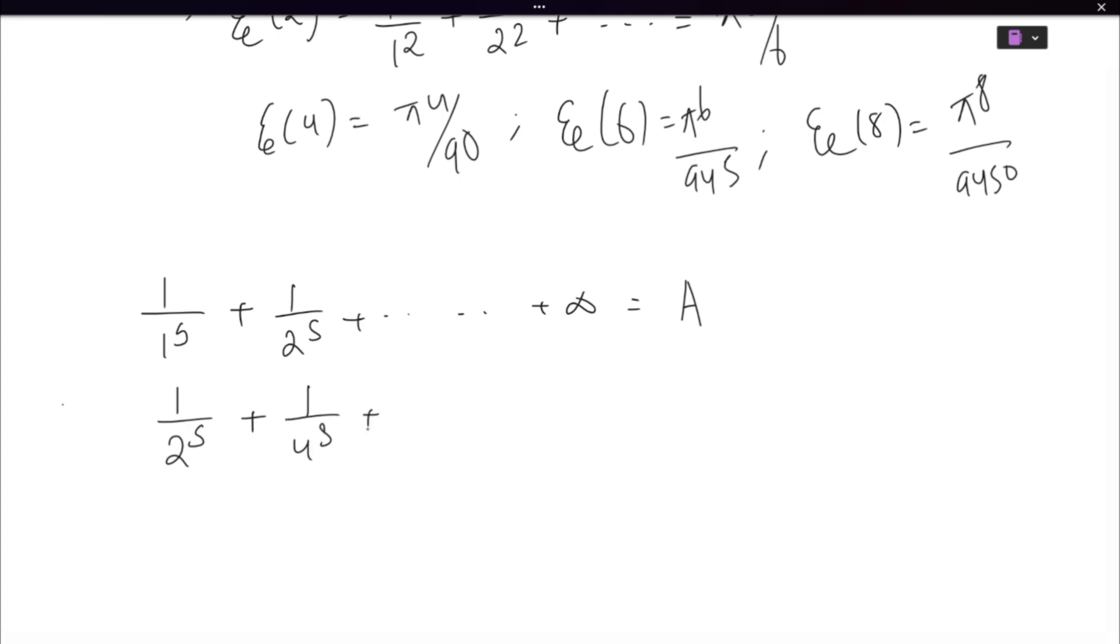When you do that, you'll get 1 by 2 to the power s, then 1 by 4 to the power s and so on. So you see how all the terms are turned into even numbers, and this is again the same series because there are infinitely many terms. So when we multiply 1 by 2 to the power s, we'll get all even terms, and the right hand side simply becomes A by 2 to the power s. Name this equation 1, name this equation 2.